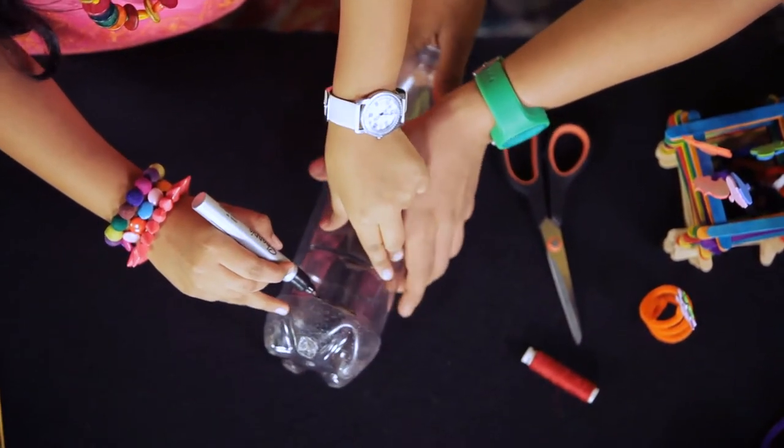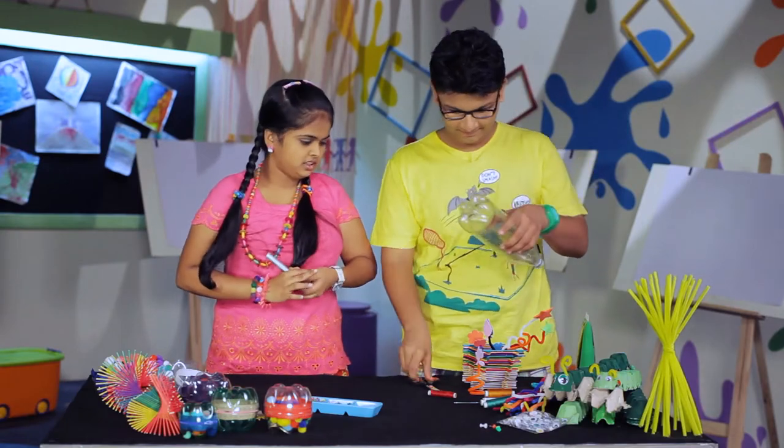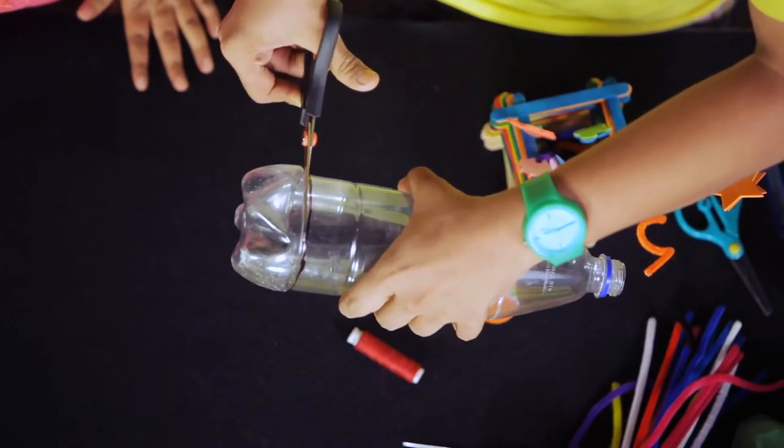Use the marker to draw a line around each bottle. Make a cut through the bottle along the line you drew with your scissors.